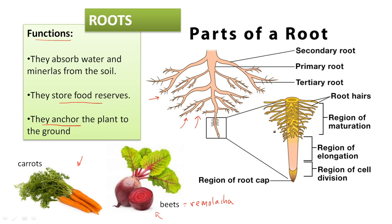What is the structure of the root? Basically, they have a main or primary root — the most important one, the central one — which is usually thicker and grows very deep, vertically. There are also secondary or even tertiary roots. As you can see, they grow horizontally. The secondary and tertiary roots are usually thinner than the primary root, and so on.